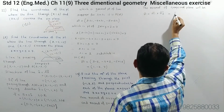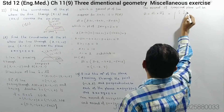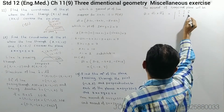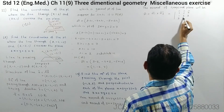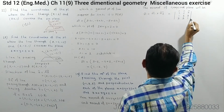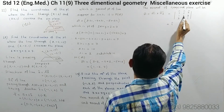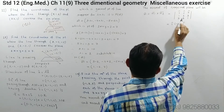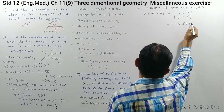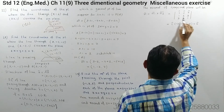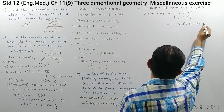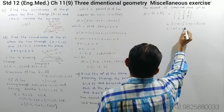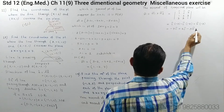Therefore the normal of the required plane is n bar = n1 bar × n2 bar. Computing the determinant with i-cap, j-cap, k-cap in the first row, (1,2,3) in the second, (3,3,1) in the third: i*(2-9) - j*(1-9) + k*(3-6) = -7i + 8j - 3k. So the normal of the required plane is (-7, 8, -3).